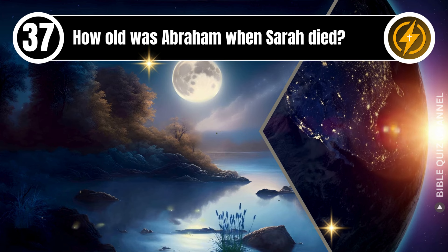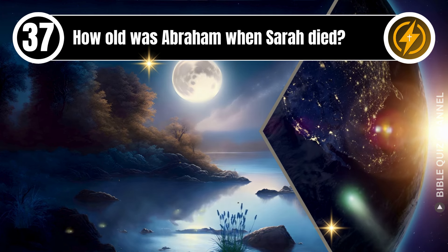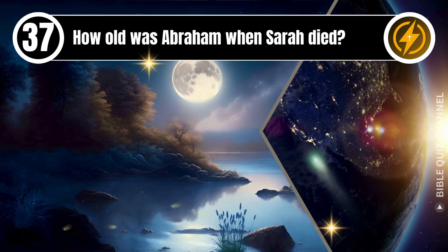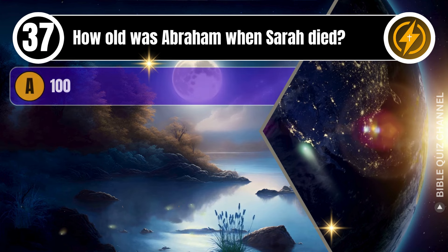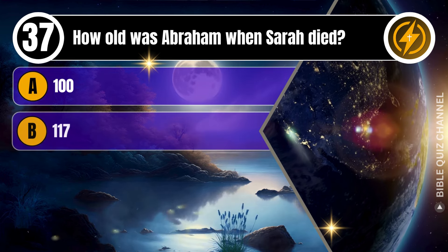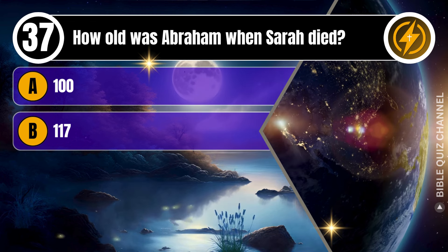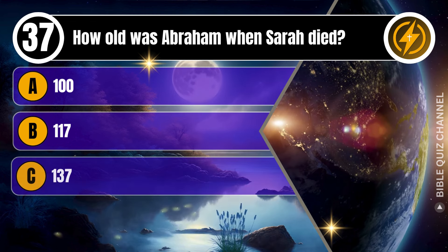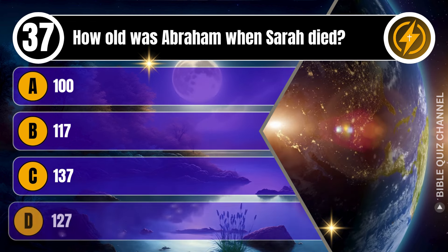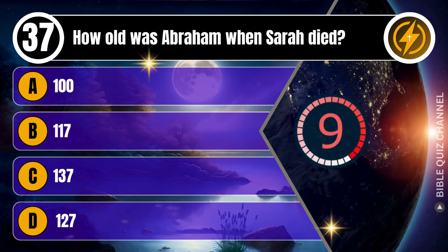Question 37. How old was Abraham when Sarah died? A. 100. B. 117. C. 137. D. 127. You get 10 seconds.